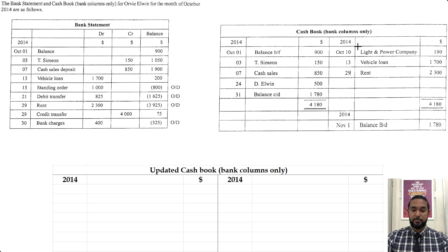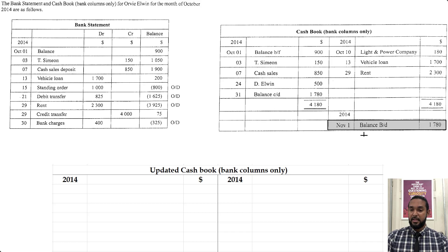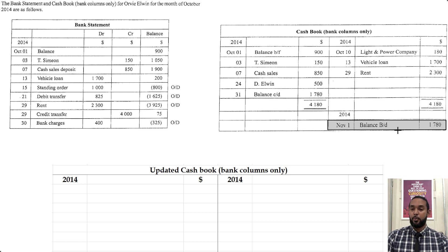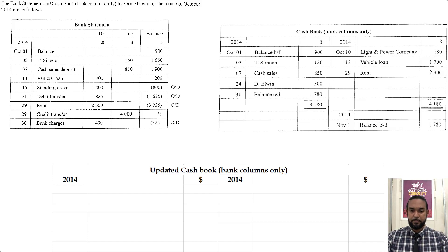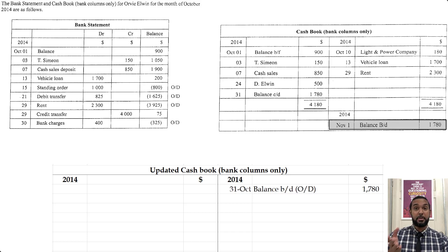So what's going to happen is two things: we have to update the cash book first, and then we're going to do a bank reconciliation. We have items in the cash book not in the bank statement and vice versa. The ending balance in the cash book is an overdraft of 1780 whereas the bank statement shows an overdraft of 325 — those don't match. We have to reconcile and explain why they differ. We start by updating the cash book, beginning with the balance as per cash book, which is an overdraft brought down on the credit side because a bank overdraft is a liability.